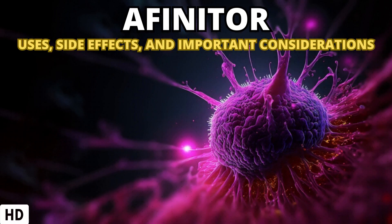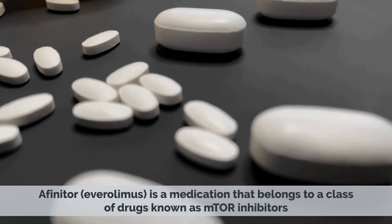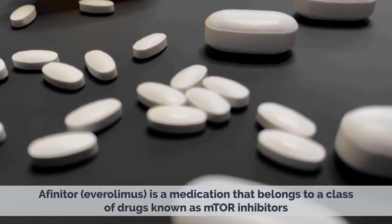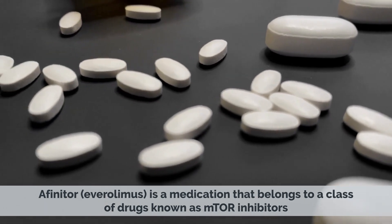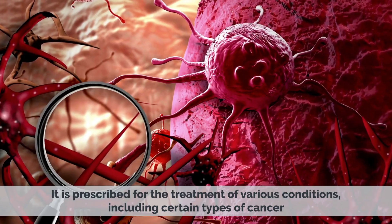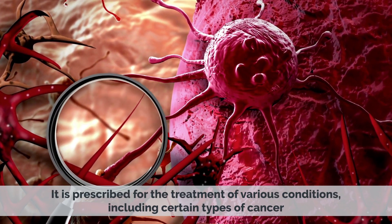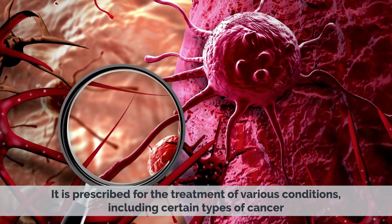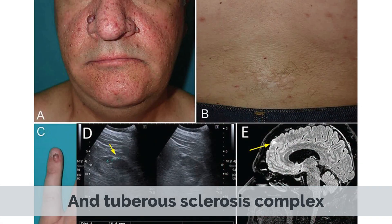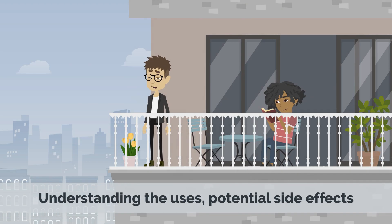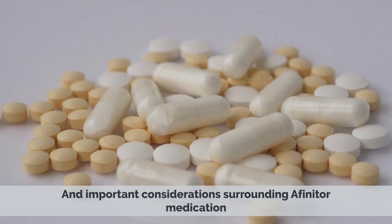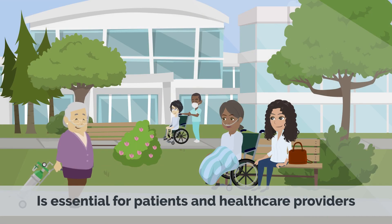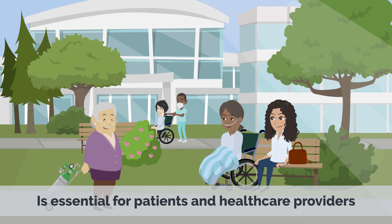Today's medical-centric topic is Affinitor: Uses, Side Effects, and Important Considerations. Affinitor, everolimus, is a medication that belongs to a class of drugs known as mTOR inhibitors. It is prescribed for the treatment of various conditions including certain types of cancer and tuberous sclerosis complex. Understanding the uses, potential side effects, and important considerations surrounding Affinitor medication is essential for patients and healthcare providers.